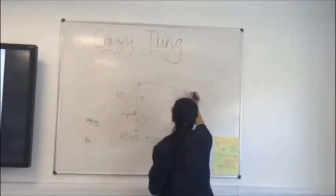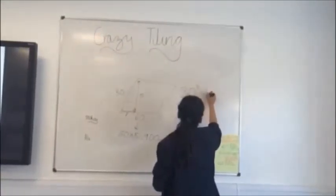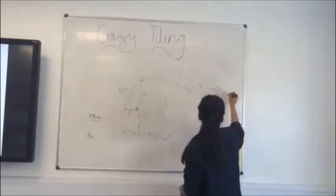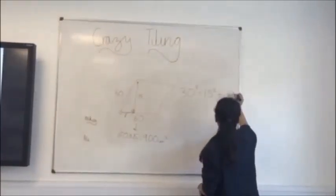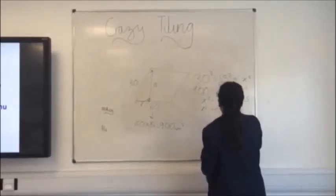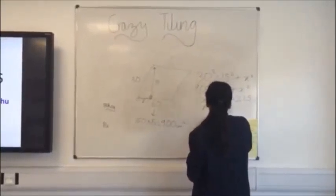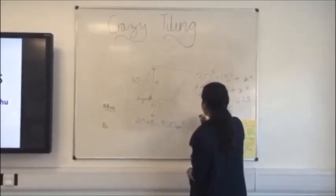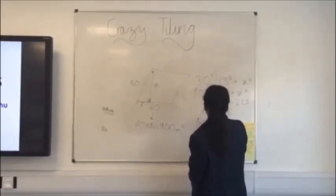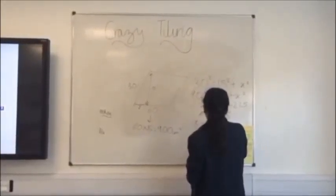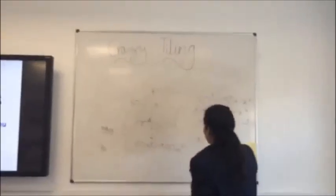And this way, we found out that 30 squared equals 15 squared plus X squared, which means 675. And now you would need to square root 675 to find out X. And that way, X equals 25.98. So, I found my X.